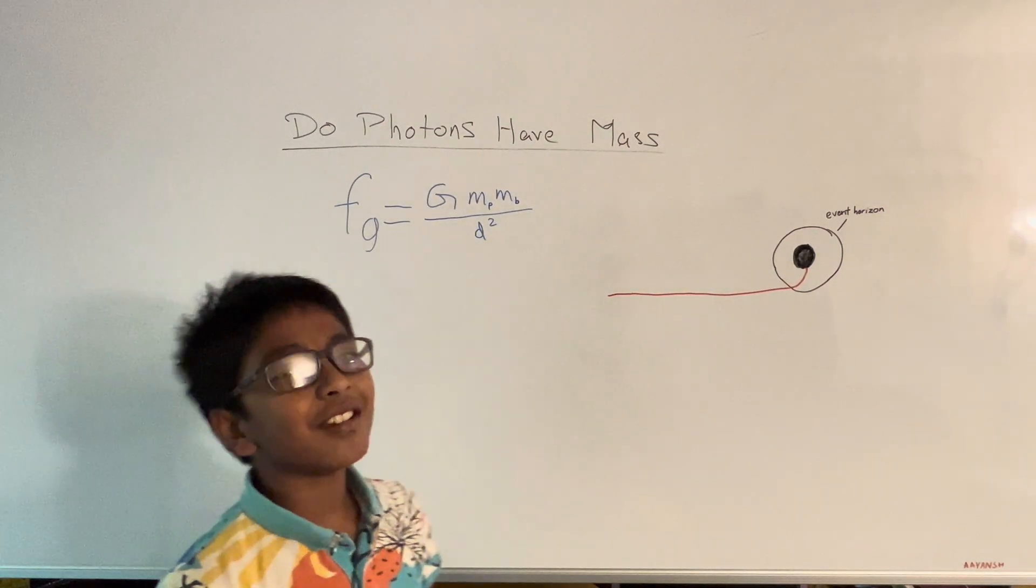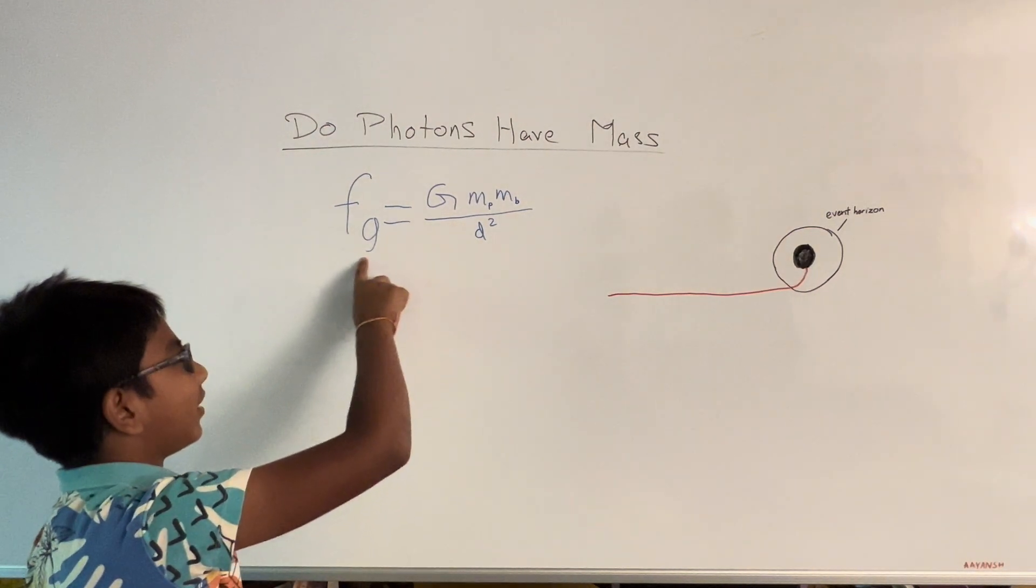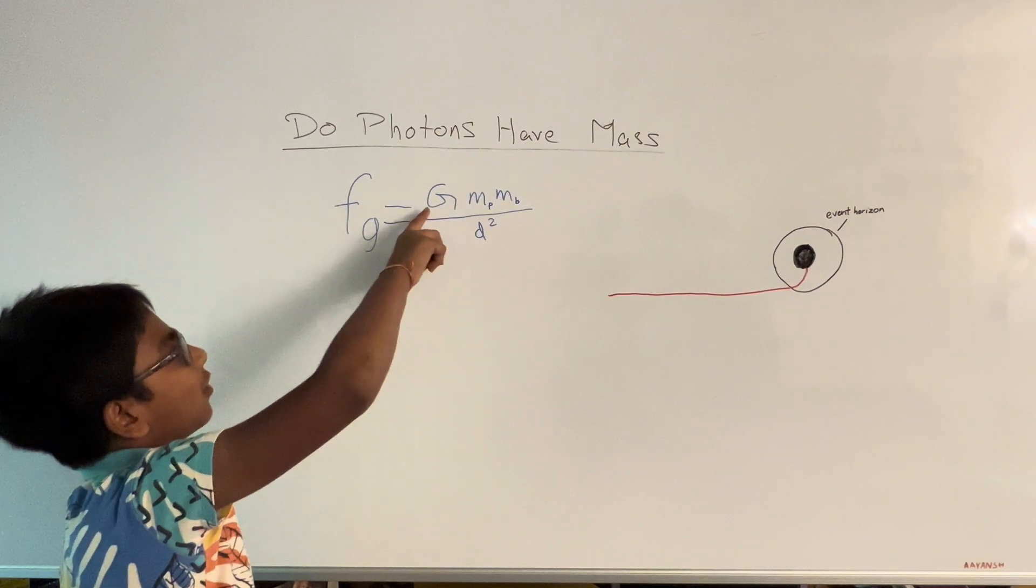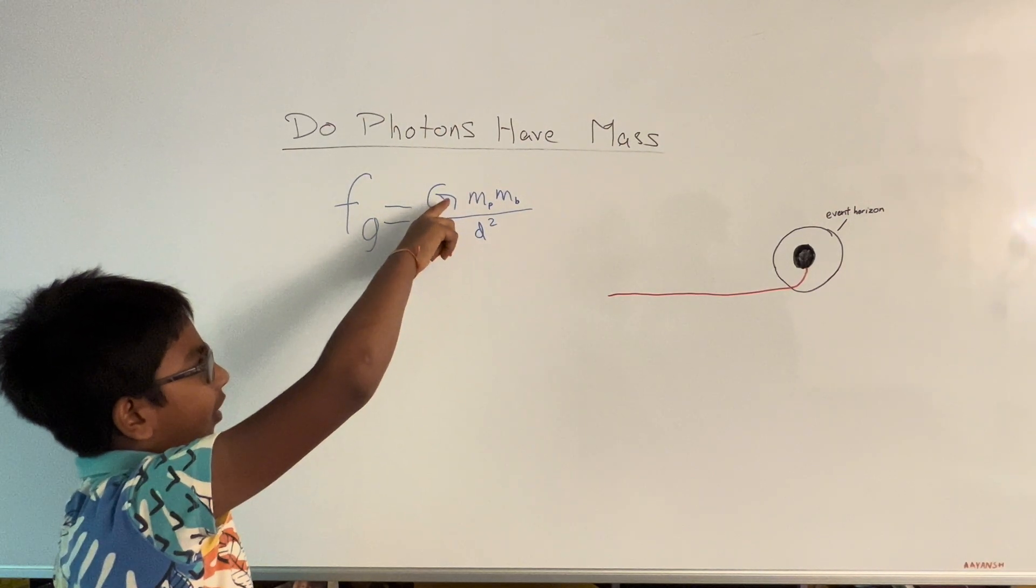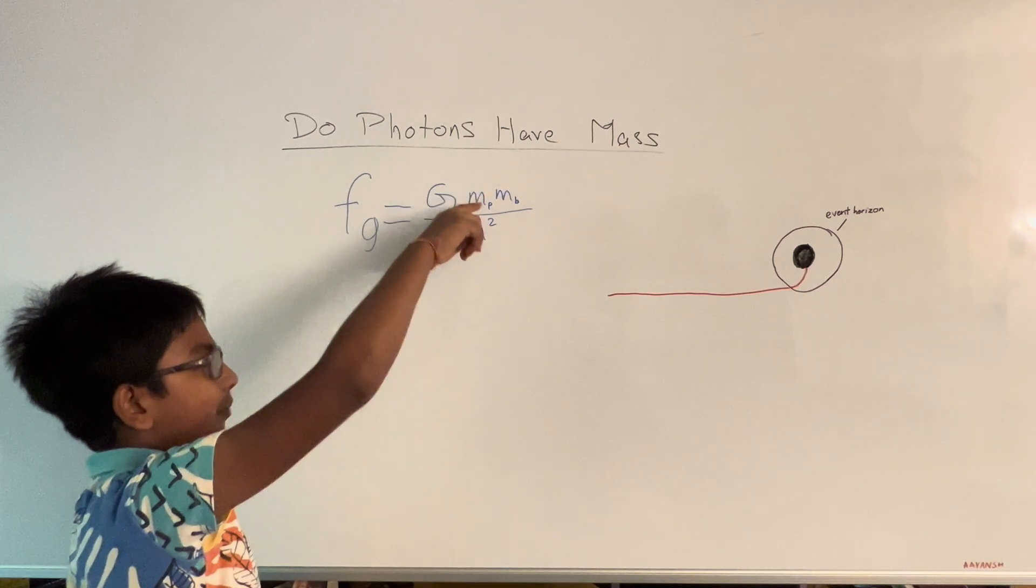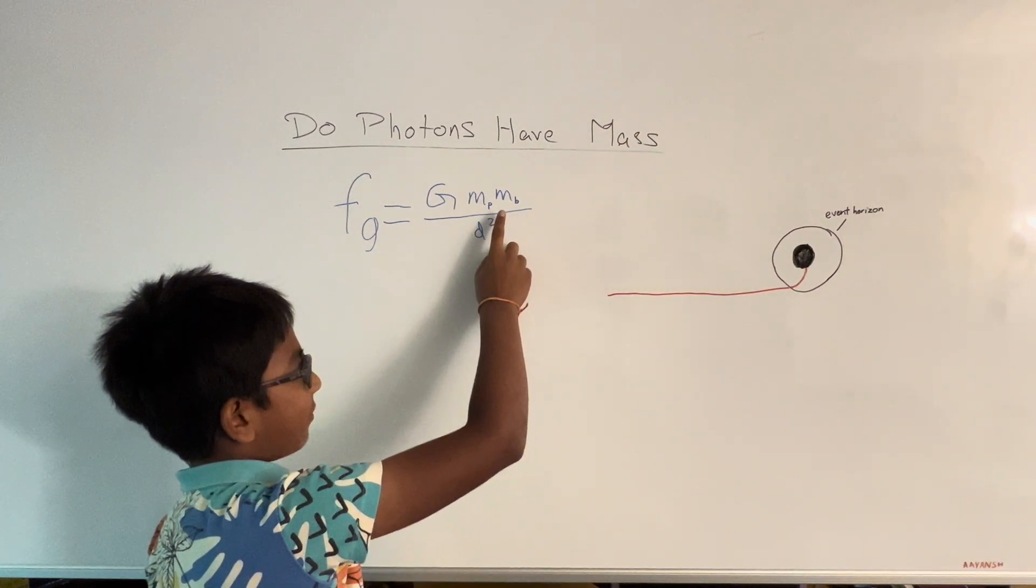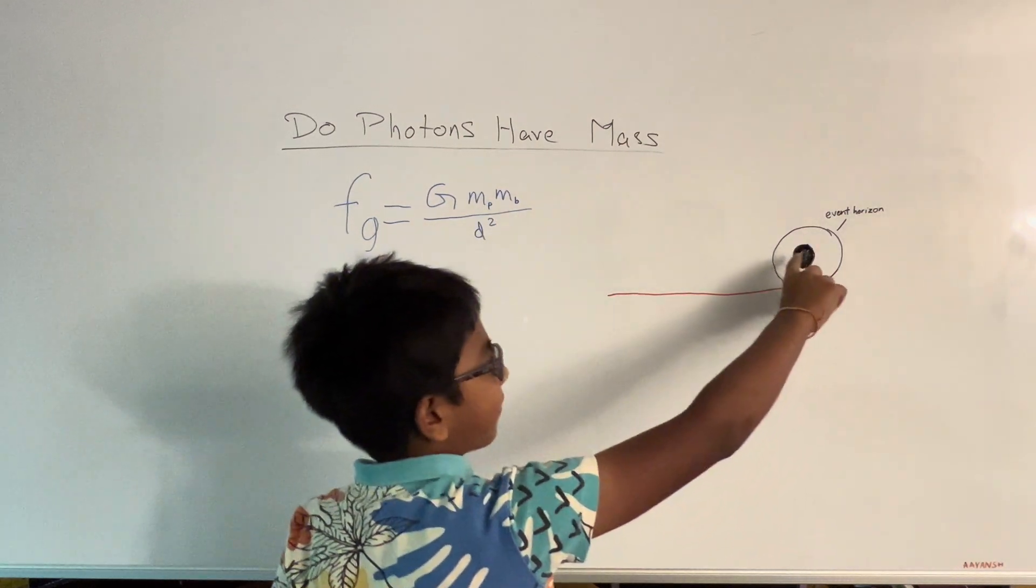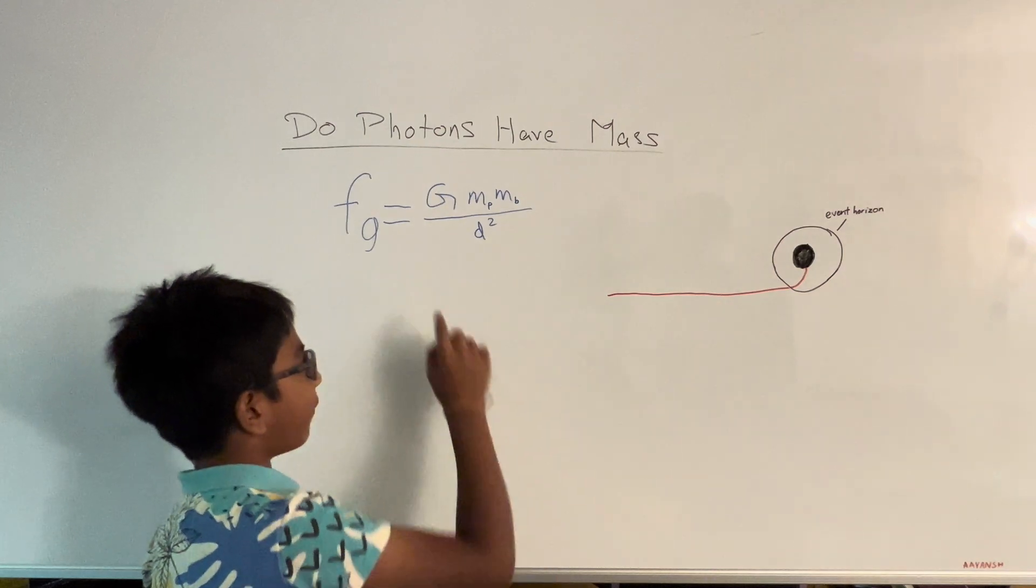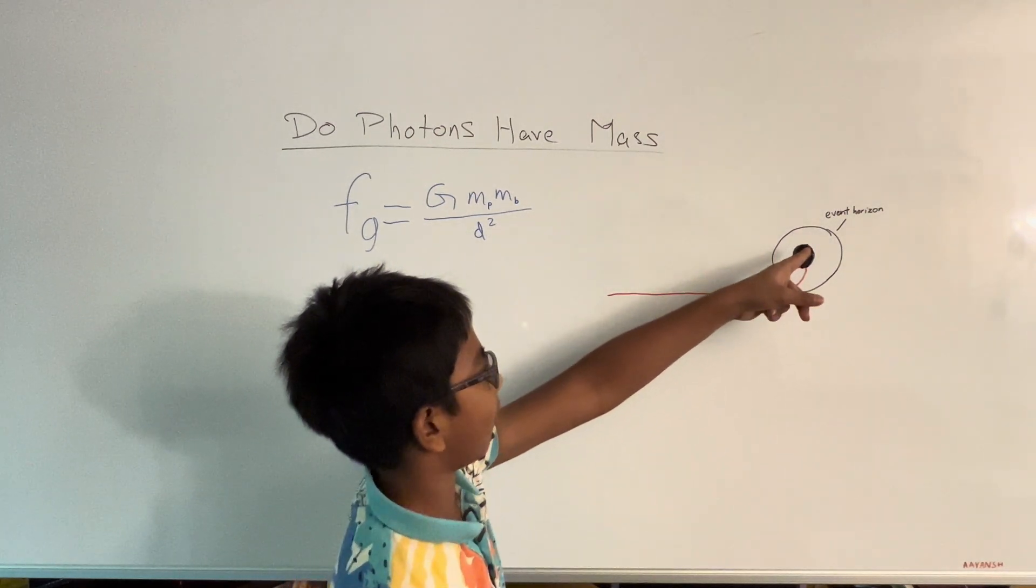And so I'm going to explain using this formula: the force of gravity equals the universal constant G times the mass of this photon that I've shot times the mass of this black hole divided by the distance between the photon and the black hole.